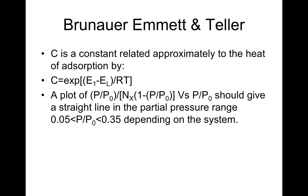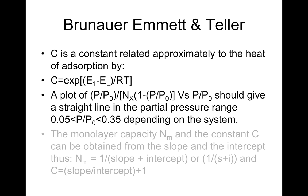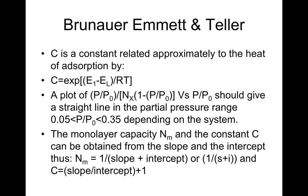Hence a plot of (P/P0) divided by (nx times (1 minus P/P0)) versus P/P0 should give a straight line in the partial pressure range 0.05 to 0.35, depending on the system. The monolayer capacity nm and the constant C can be obtained from the slope and intercept: nm equals 1 over (slope plus intercept), and C equals (slope over intercept) plus 1.